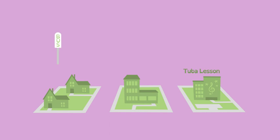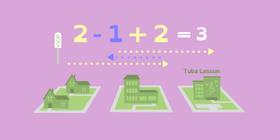One way to represent Lucy's journey is like this. By walking two blocks forward, one block back, and two blocks forward, Lucy ends up three blocks from the stop, yet she walked more than that.